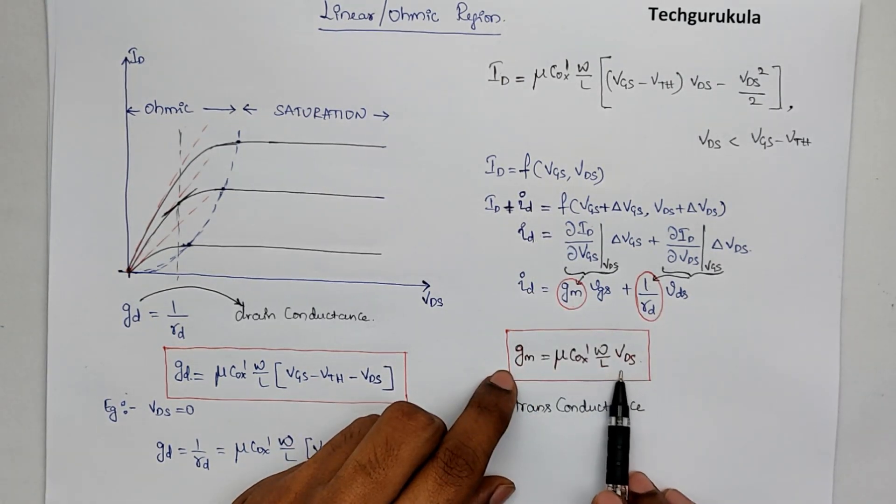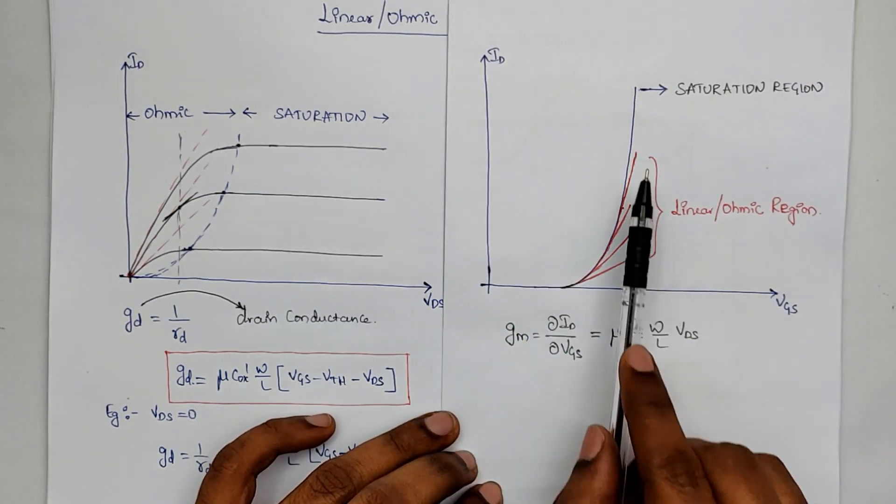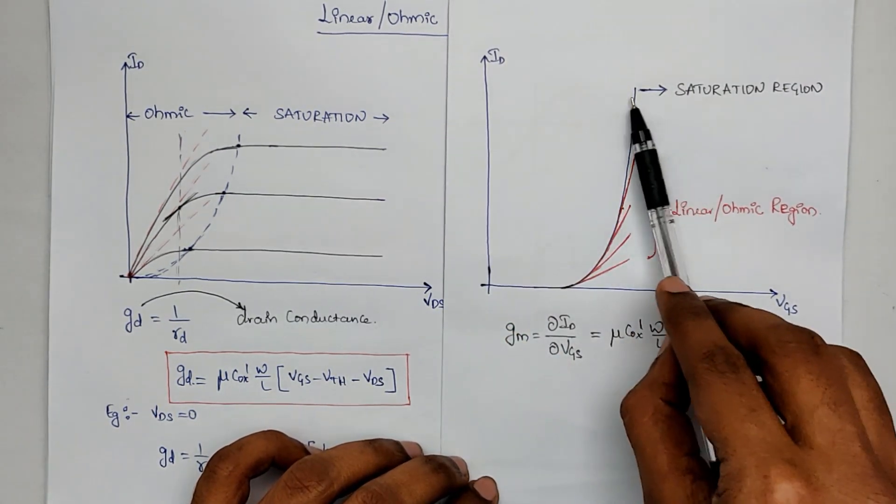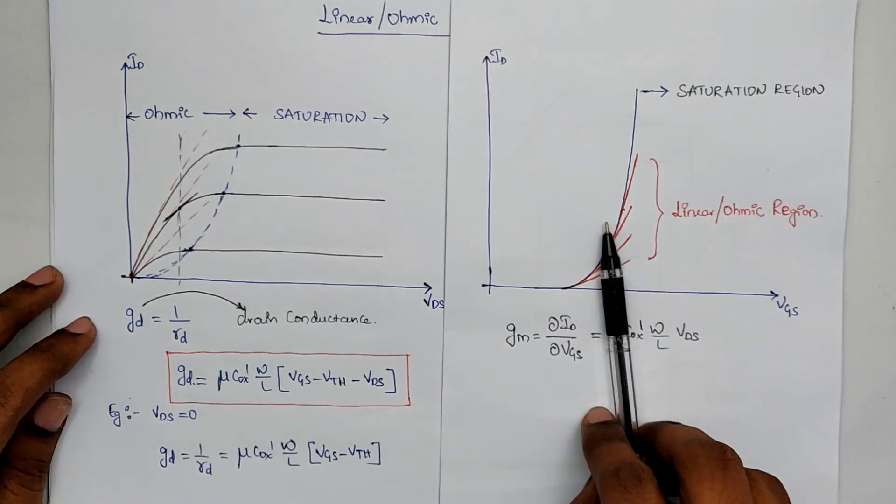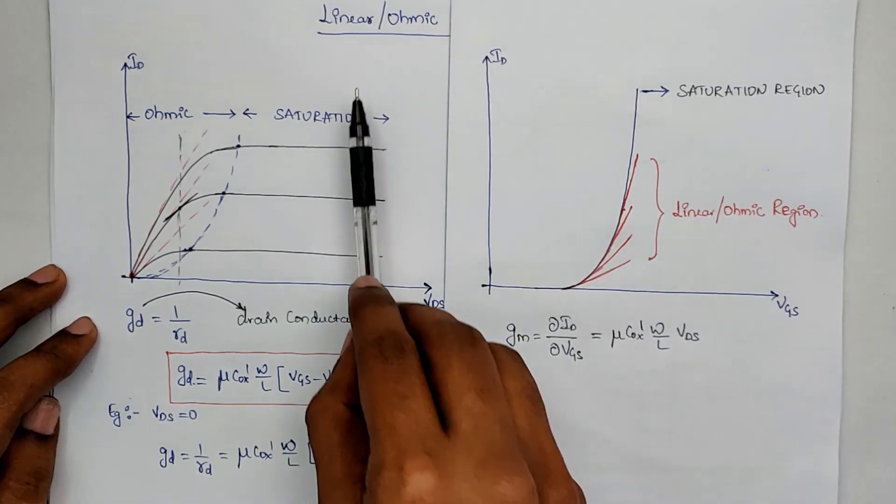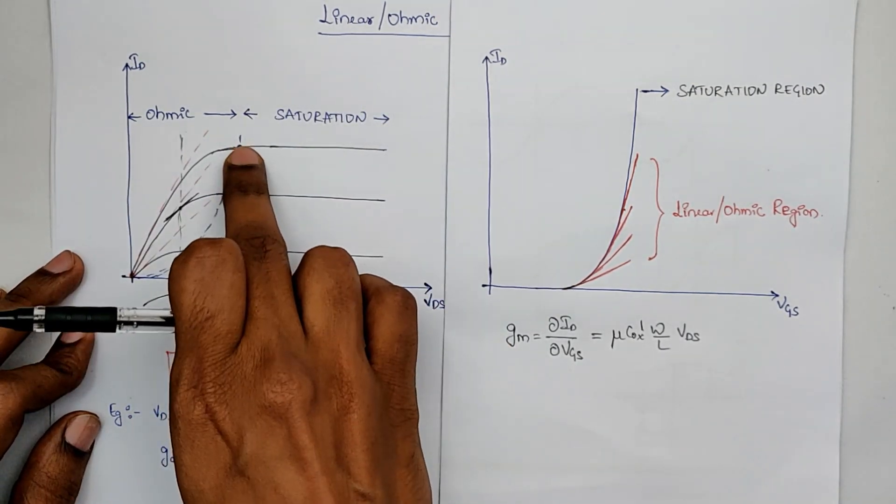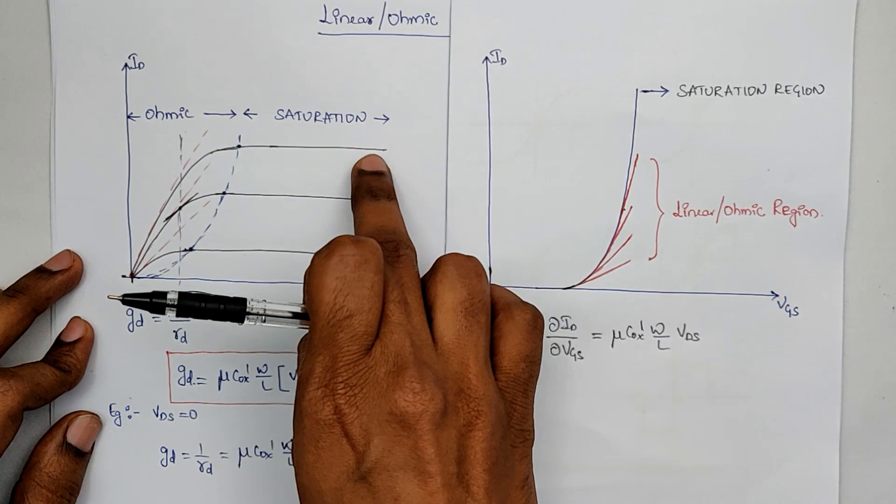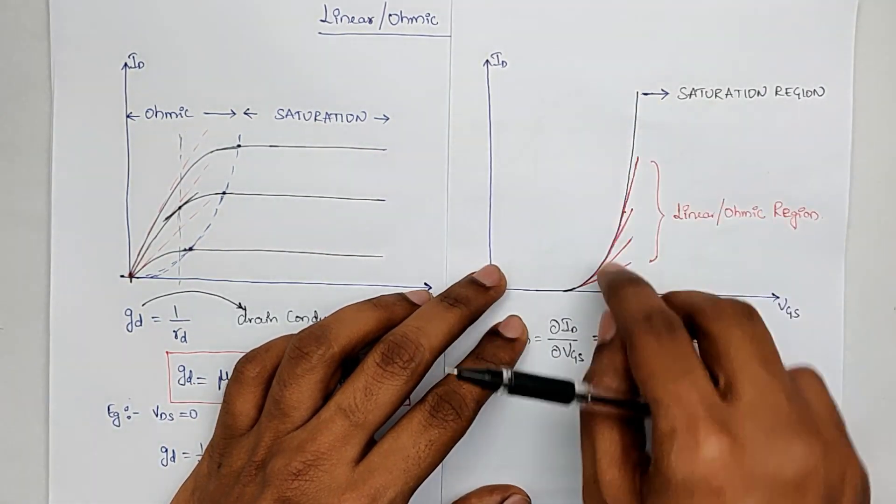Let's look at the ID versus VGS characteristics. This is how the ID versus VGS characteristics would look. This curve is for saturation region. And we have seen in working and IV characteristics of MOSFET that when we move VDS, the drain current is not going to change for a given VGS. So let's take if we take a VGS here, the current in saturation is not going to change.